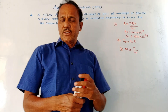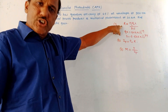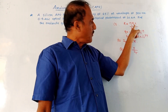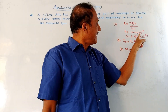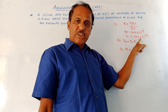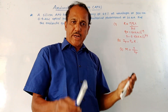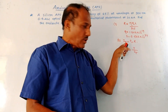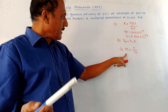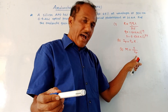Now let us solve one numerical. All the numericals as far as APD is concerned use simple formulae. The key formulas are: Responsivity R = (eta × Q × lambda) / (H × C), where eta is quantum efficiency, Q is charge of electron (1.602 × 10⁻¹⁹ C), lambda is operating wavelength, H is Planck's constant (6.626 × 10⁻³⁴), and C is the speed of light (3 × 10⁸ m/s). Second formula: IP = P0 × R, where P0 is optical power and R is responsivity. Third: gain or multiplication factor M = I / IP, where I is the multiplied current and IP is the photocurrent.